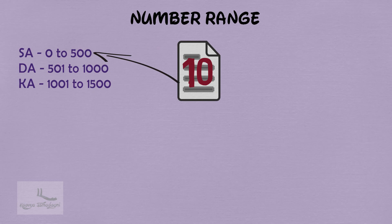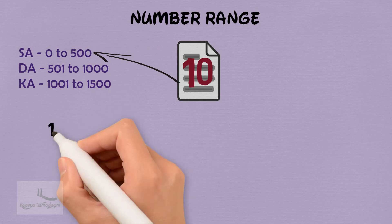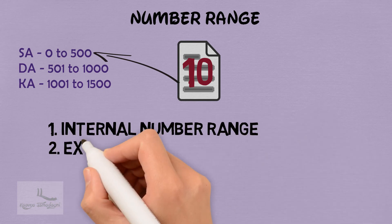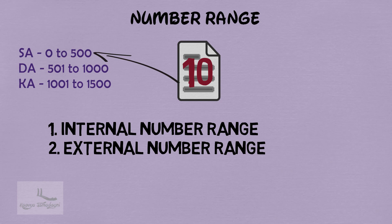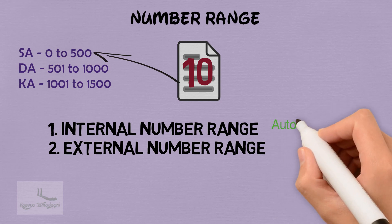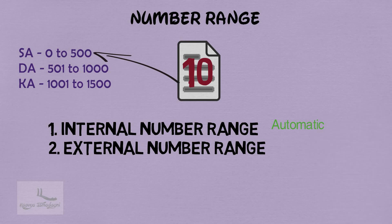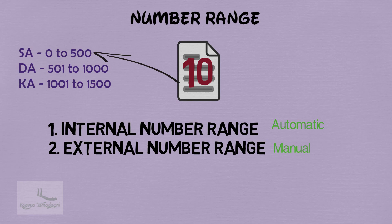The document number interval can be either external or internal. If internal, the system picks up the document number automatically from the specified interval in a systematic manner. If external, the user has to enter the document number manually from the specified interval. In SAP, we normally use internal numbering for most cases, and external only in rare cases.